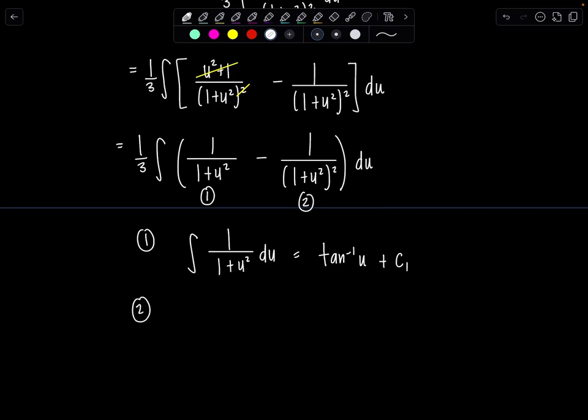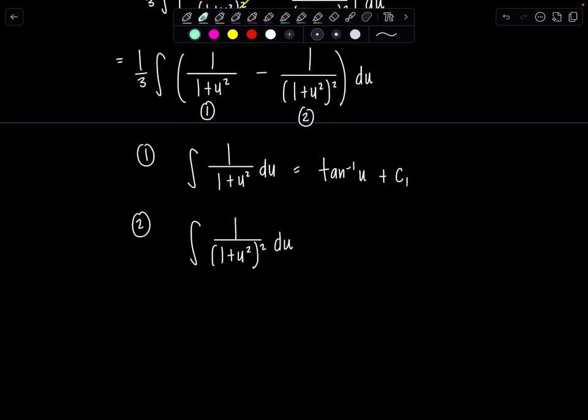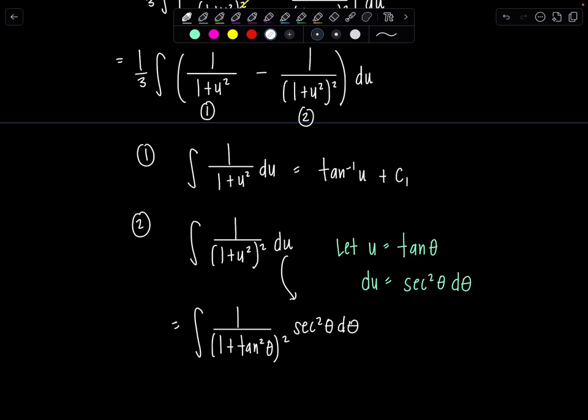And then what about this second integral? One over one plus u squared squared. Oh, why, oh why did it have to be squared? So that we could show everybody how good we are at trig sub. So which trig substitution do we use? Since we have a variable quantity squared plus a constant, we're going to use tangent theta. So we're going to let u be tangent theta. And then du is secant squared theta d theta. So now let's rewrite the whole integral in terms of theta. So we'll have one over one plus u squared is now one plus tan squared theta squared. And then du is secant squared theta d theta.